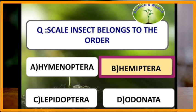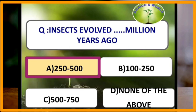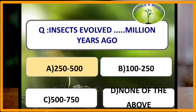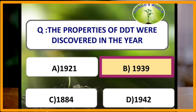Scale insect belongs to the order Hemiptera. Insects evolved 250 to 500 million years ago. The properties of DDT (dichlorodiphenyltrichloroethane) were discovered in the year 1939 by Paul Müller.